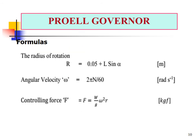The radius of rotation r is equal to 0.05 plus L sin(alpha). Angular velocity omega can be calculated as 2πN divided by 60 radians per second. The controlling force F is equal to (W/g) × omega squared × r.